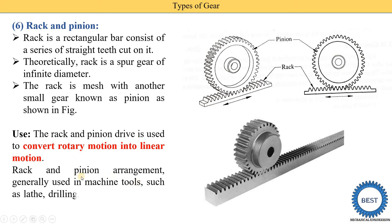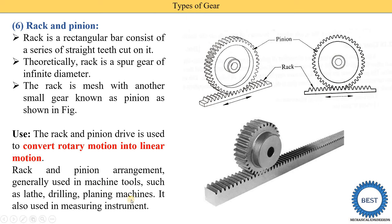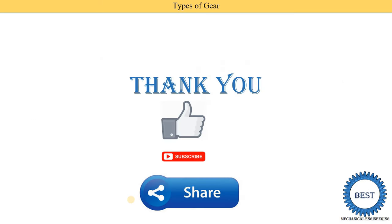Rack and pinion is generally used in machine tools such as lathe machine, drilling machine, and planing machines, and also in measuring instruments. In these machines there is a handle, and when we rotate the handle the carriage in the lathe machine or the table in other machines like drilling and planing machines moves linearly. So the rack and pinion mechanism is used to convert rotary motion into linear motion or linear motion into rotary motion.